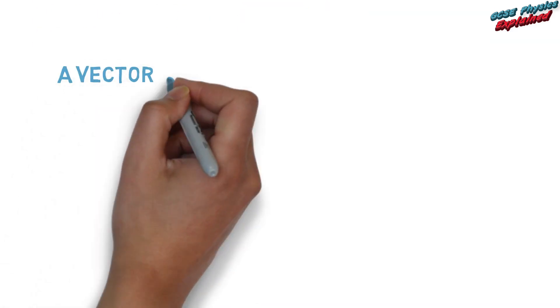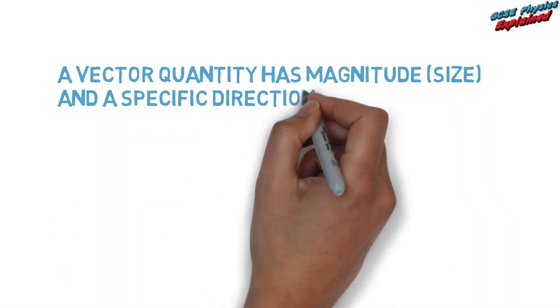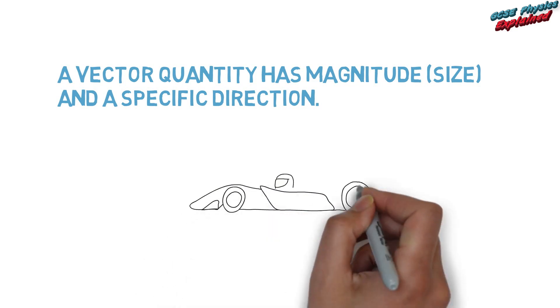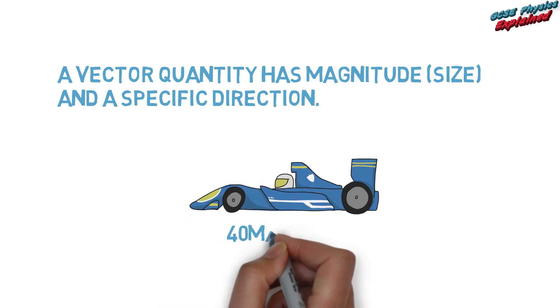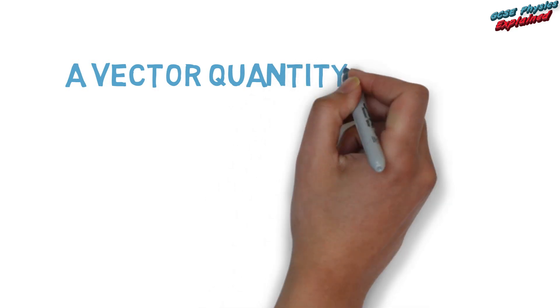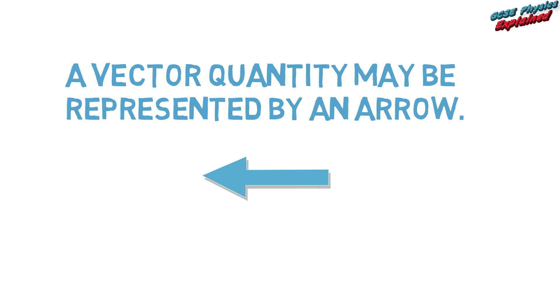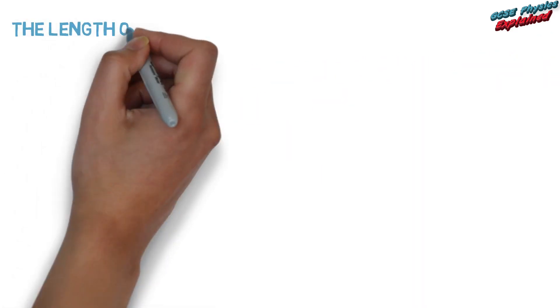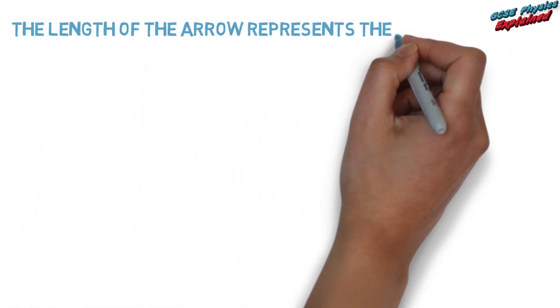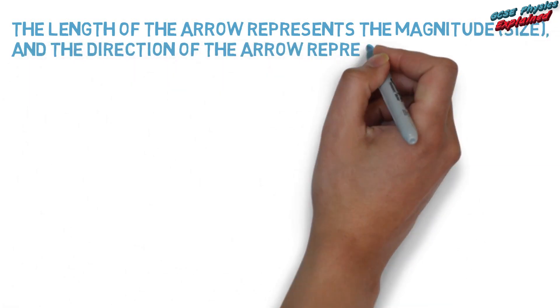A vector quantity has magnitude or size and a specific direction. For example, 40 meters per second west. A vector quantity may be represented by an arrow. The length of the arrow represents the magnitude or size, and the direction of the arrow represents the direction.